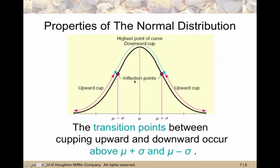Those always occur one standard deviation away from the mean, which is really cool. So the inflection points are at mu minus sigma, so the mean minus one standard deviation, and mu plus sigma, so the mean plus one standard deviation.